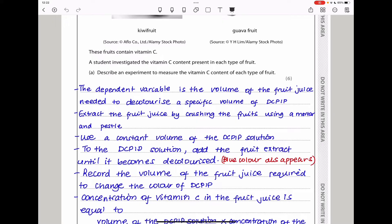The dependent variable is the volume of the fruit juice needed to decolorize a specific volume of DCPIP solution. You need to extract the fruit juice by crushing or squashing the fruit using a mortar and pestle. This process is squashing to produce the juice out of the fruit. Then you will take a specific volume of the DCPIP solution, maybe in a test tube.